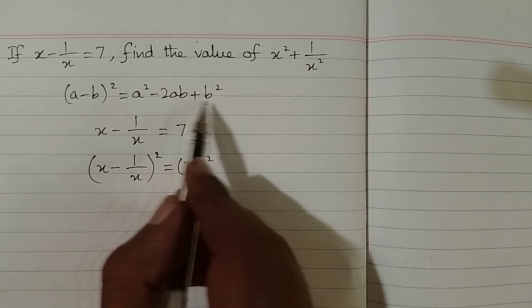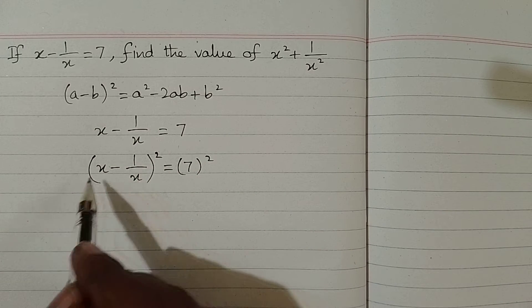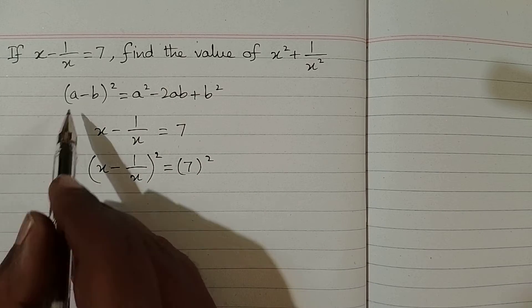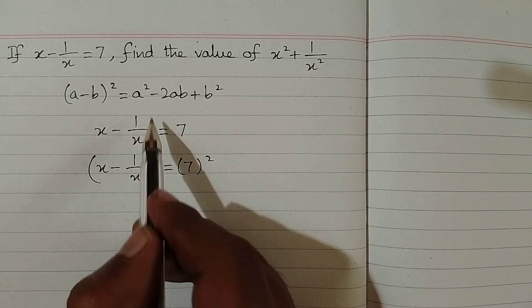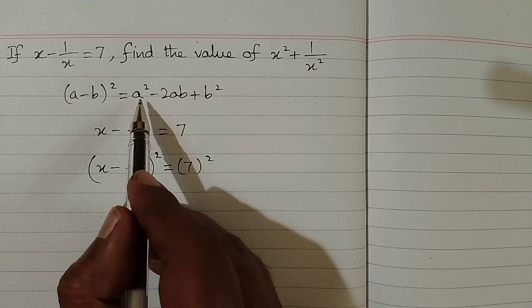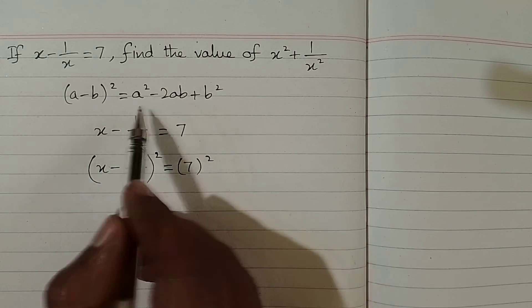Now we can apply this formula on this factor. We can see that we have x in place of a and 1 upon x in place of b, so we can put the values of a and b in this formula in the respective places.